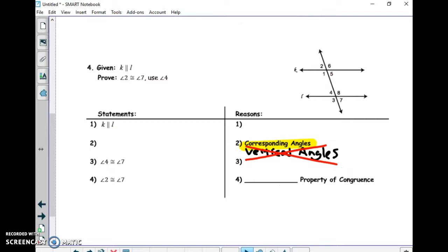Make sure on number four, there was a typo on the original assignment. It originally said vertical angles. On number four, step two is reason. Cross that out, put corresponding angles. It's the reason that's supposed to be for step two on number four.